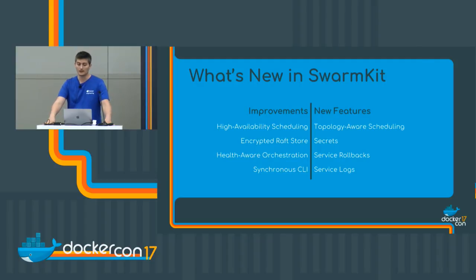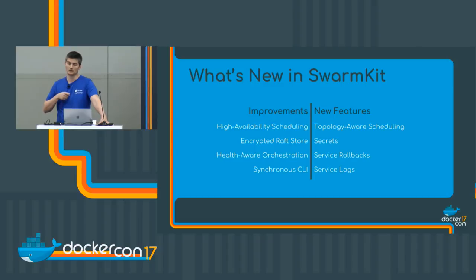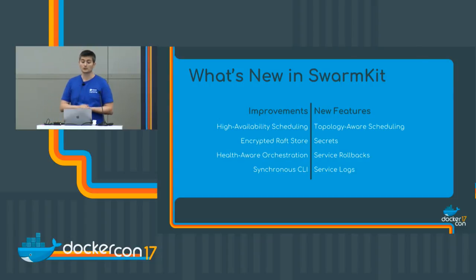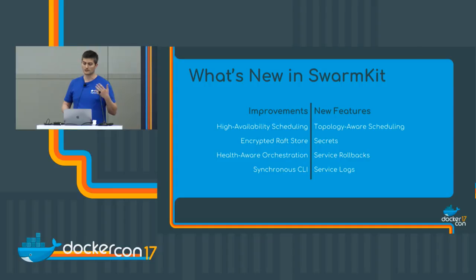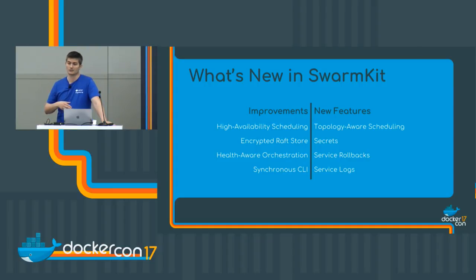We have health-aware orchestration, which is a way to basically ensure zero-downtime deployment. When we bring down a container because we need to update it, first we remove it from the load balancer, and then once it's removed, we shut it down. We also have a bunch of improvements on rollbacks — now we have automatic rollback, and you can define the threshold to kick off a rollback. We also have service logs, so you can grab logs of a service, aggregating all the containers that are part of the service and returning that to the CLI.